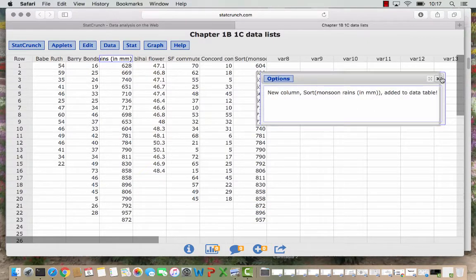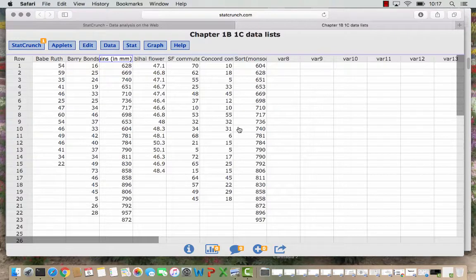What it's done is made me a new column over here of the sorted monsoon rains. And we can verify the minimum value is 604 millimeters and the maximum value is 957 millimeters.